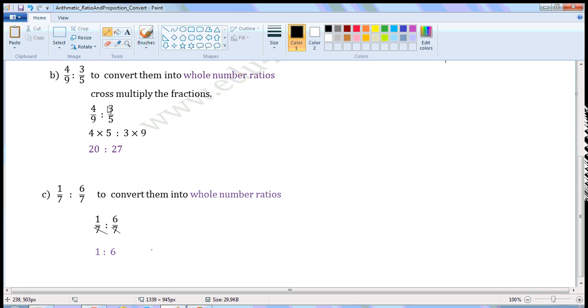Write 4/9 is to 3/5. Multiply the numerator of the antecedent with the denominator of the consequent. Then multiply the numerator of the consequent with the denominator of the antecedent.